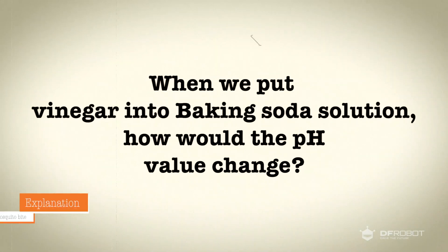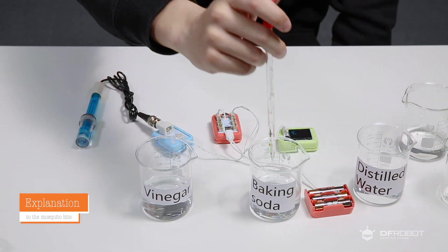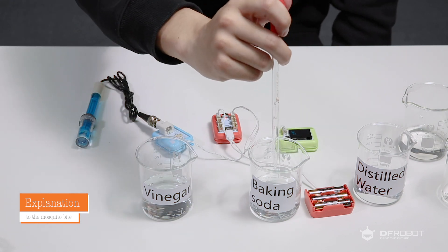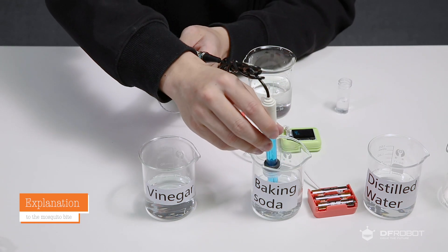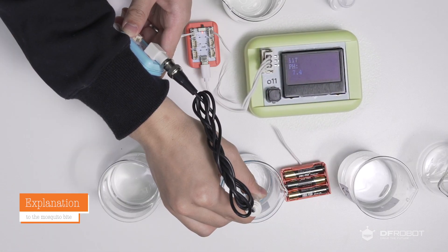Now I have an idea. When we put vinegar into baking soda solution, how would the pH value change? By adding 2 milliliters of vinegar after 30 seconds, the pH level changes from 8.1 to 7.4. It's not that acidic.